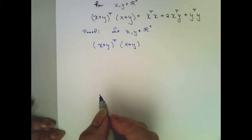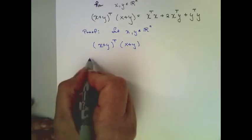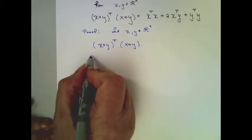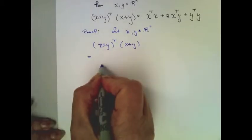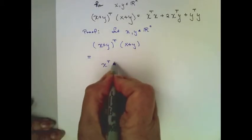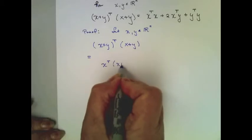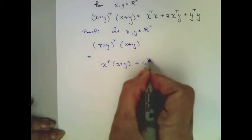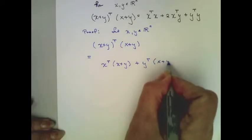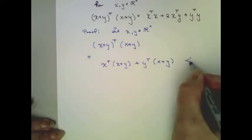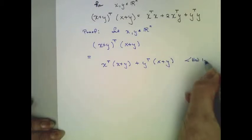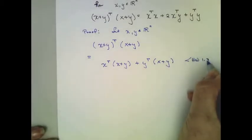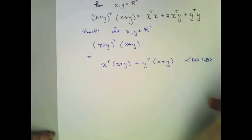Well, we know by our last problem that this is equal to x transpose times (x + y) plus y transpose times (x + y). I think that was homework 1.23.